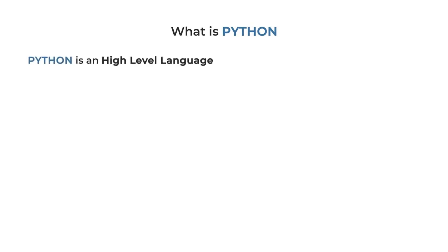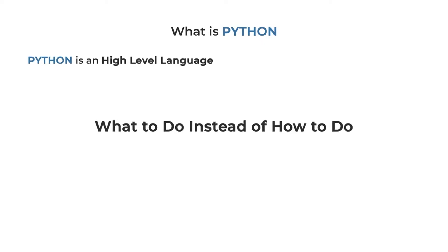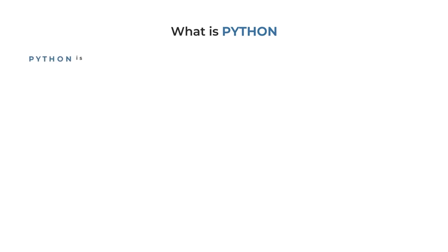Python is a very high-level programming language. What that means is that anybody who knows English can do Python. We have seen people using it from as early as 5th grade. You can do a lot in just a few lines of code — that is a beautiful thing.